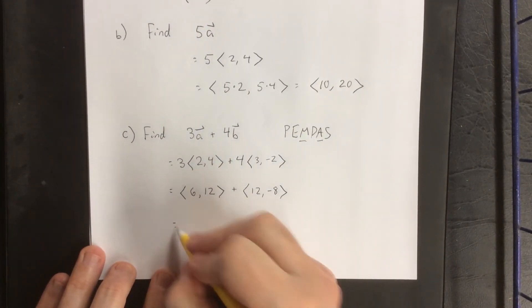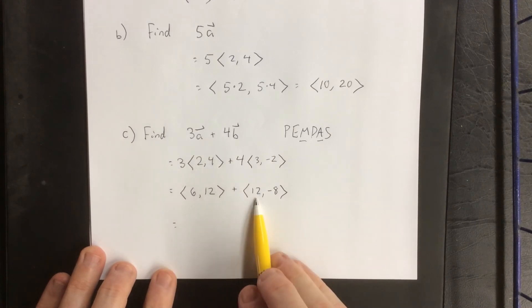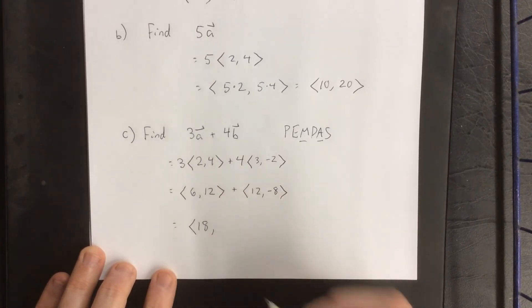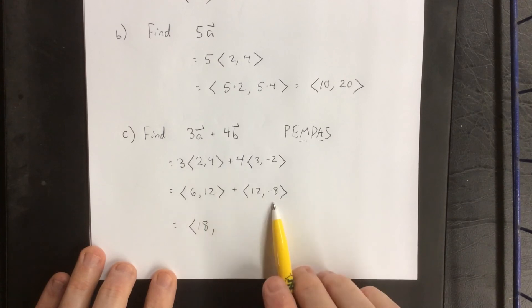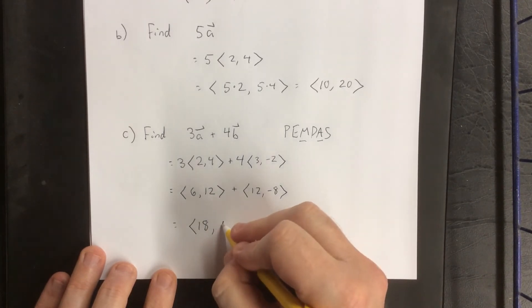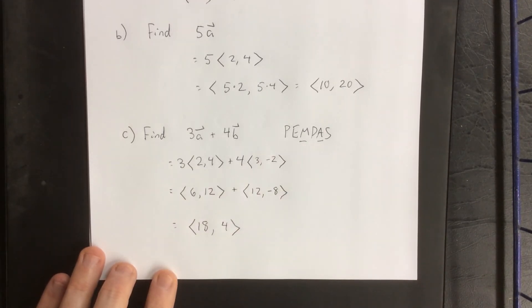Adding these component-wise, the first component will be 6 plus 12, and the second component will be 12 plus negative 8. Final answer for this one: 18, 4.